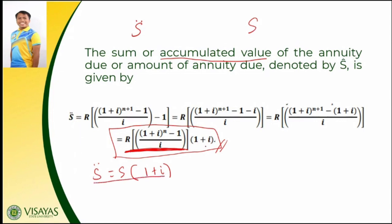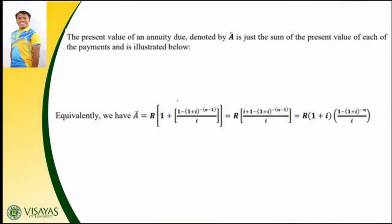The present value of an annuity due, denoted by A with two dots on top, is just the sum of the present value of each of the payments, as illustrated in our formula. This is equivalent to A equals R times a certain expression. After doing the necessary operations — addition, subtraction, multiplication, division — you can derive the formula for finding the present value of an annuity due, which we will use later in problem solving.